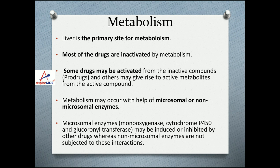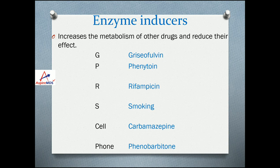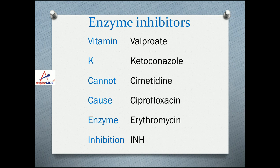Metabolism: the liver is the primary site for drug metabolism and most drugs are inactivated by metabolism. However, some drugs — prodrugs — get activated after metabolism. Metabolism may occur via microsomal enzymes such as monooxygenase, cytochrome P450, or glucuronosyltransferase, which may be induced or inhibited by other drugs. Non-microsomal enzymes are not subject to these interactions. Enzyme inducers can be remembered by the mnemonic 'GPRS cell phone': G for griseofulvin, P for phenytoin, R for rifampicin, S for smoking, 'cell' for carbamazepine, 'phone' for phenobarbitone. Enzyme inhibitors include valproate, ketoconazole, cimetidine, ciprofloxacin, erythromycin, and isoniazid.